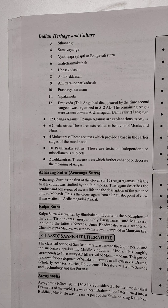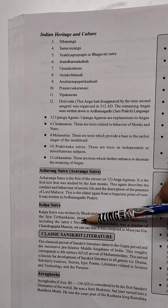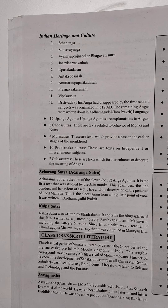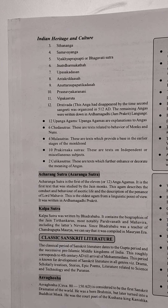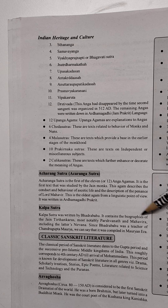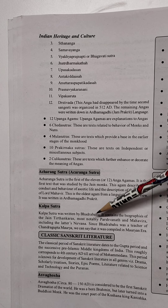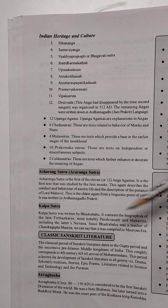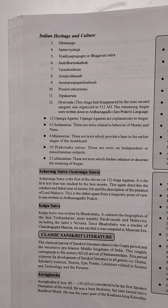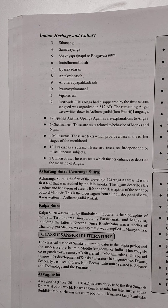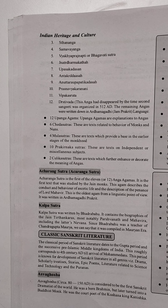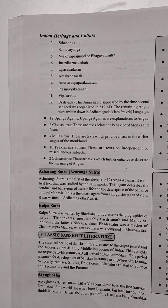Kalp Sutra was written by Bhadrabahu. It contains the biographies of Jain Tirthankars, most notably Parshvanath and Mahavira, including the details of their Nirvana. Notably, Bhadrabahu was a teacher of Chandragupta Maurya.